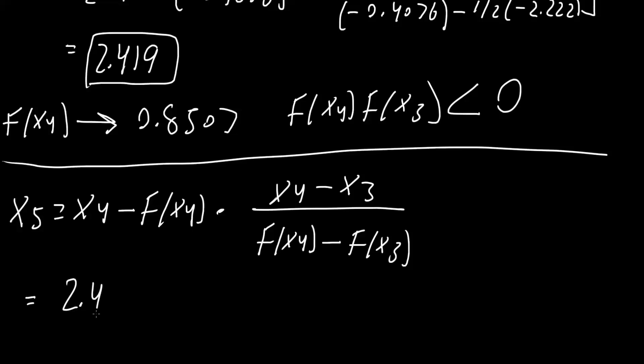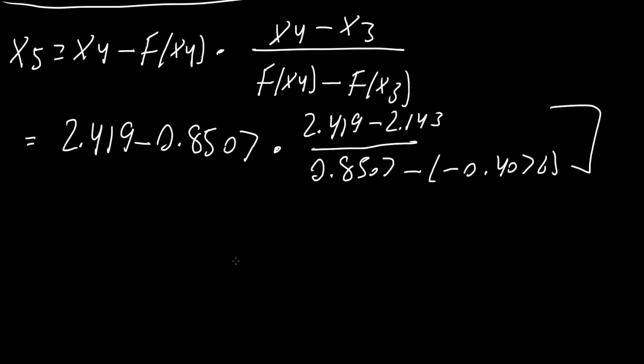So 2.419 minus 0.8507 times 2.419 minus 2.143 divided by 0.8507 minus parentheses minus 0.4076, like this. We plug this right here into a calculator, and we would get 2.232.